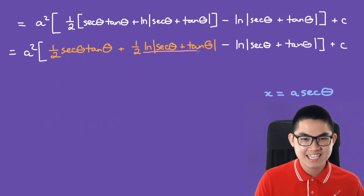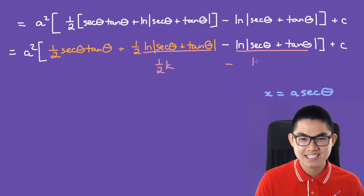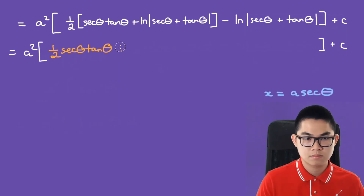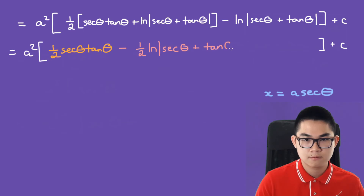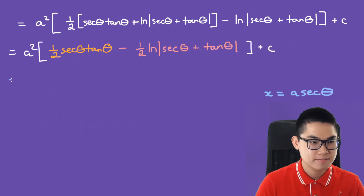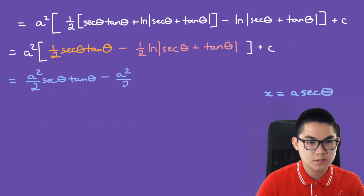Notice that the ln terms are the same, so combining them is like saying one half k minus k, which is just negative one half k. After multiplying a squared through, we have a squared over 2 times secant times tan, minus a squared over 2 times the ln of secant plus tan.